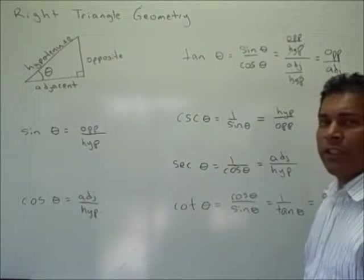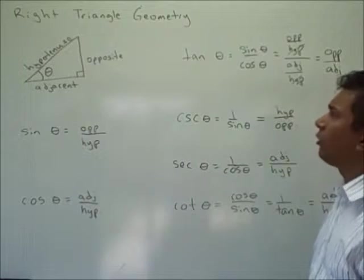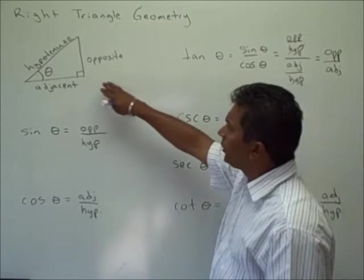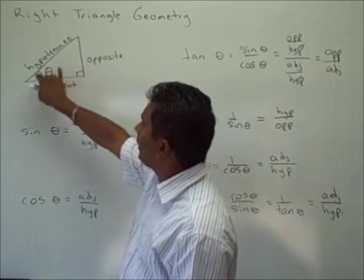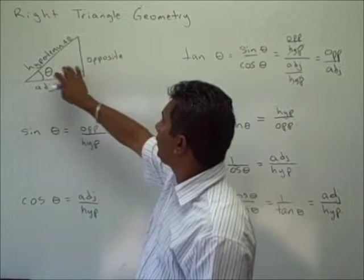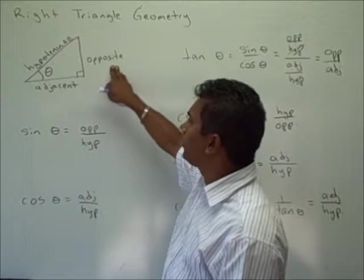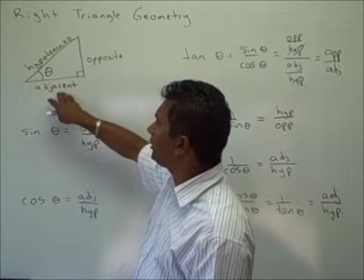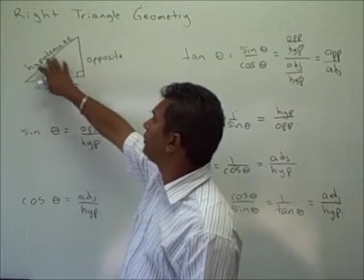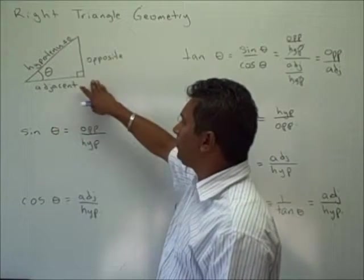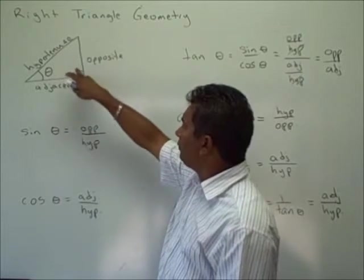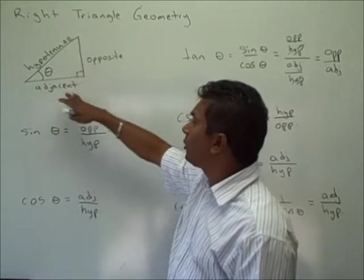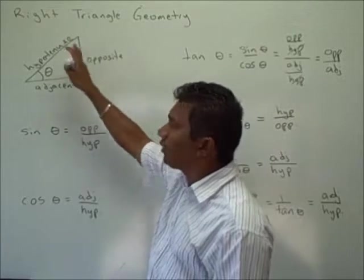Now let's define our six trigonometric functions in terms of our right triangle geometry. Here we have a right triangle. One angle is labeled theta. The side across from theta is known as the opposite. The side touching this angle is known as adjacent, and the hypotenuse is the side opposite the right angle. Our six trigonometric functions are defined in terms of all three sides.